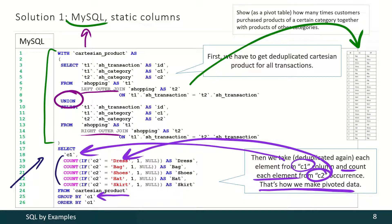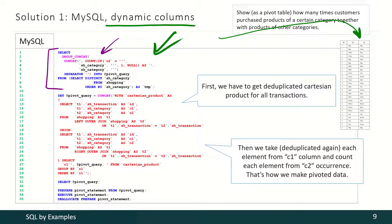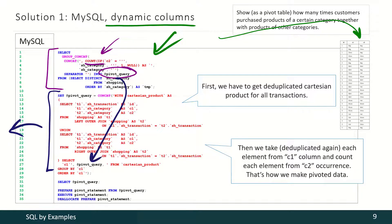Yet there is another trouble — all these category names are static here. But if we want dynamic columns, i.e. dynamic category names, we have to follow this approach. First we have to produce that query section with a lot of count function calls and put the result into a variable. Then we have to take the query from the previous solution, put that section in, and execute that query. And that's how we get our final result.